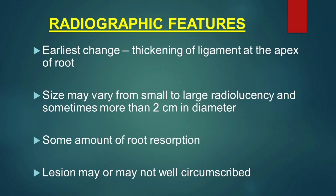Radiographic features: the earliest change is thickening of the periodontal ligament at the apex of the root. The size of the granuloma may vary from small to large radiolucency, sometimes more than two centimeters in diameter. Some amount of root resorption is also present.